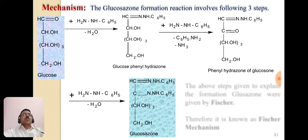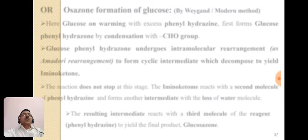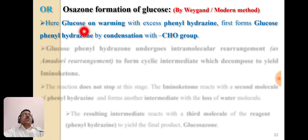The melting point of glucosazone is 205°C. All the above steps were given by Fischer, so this mechanism is known as the Fischer mechanism. Now let us see the alternative mechanism — the modern method or Wegand method for osazone formation. According to Wegand, the first step is common with Fischer: glucose on warming with excess phenylhydrazine forms glucose phenylhydrazone by condensation with the aldehyde group.